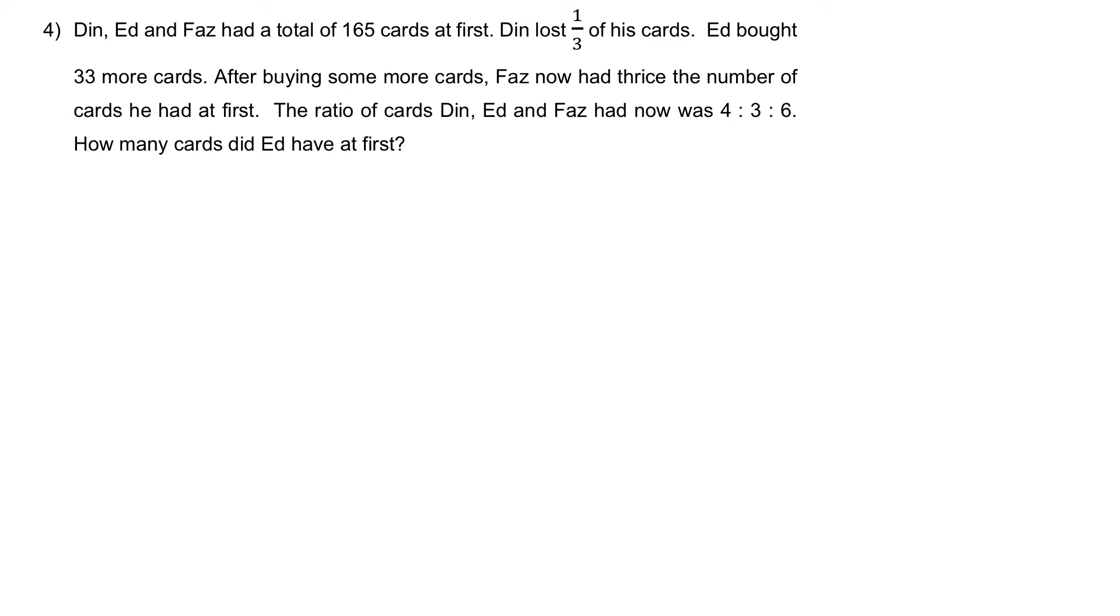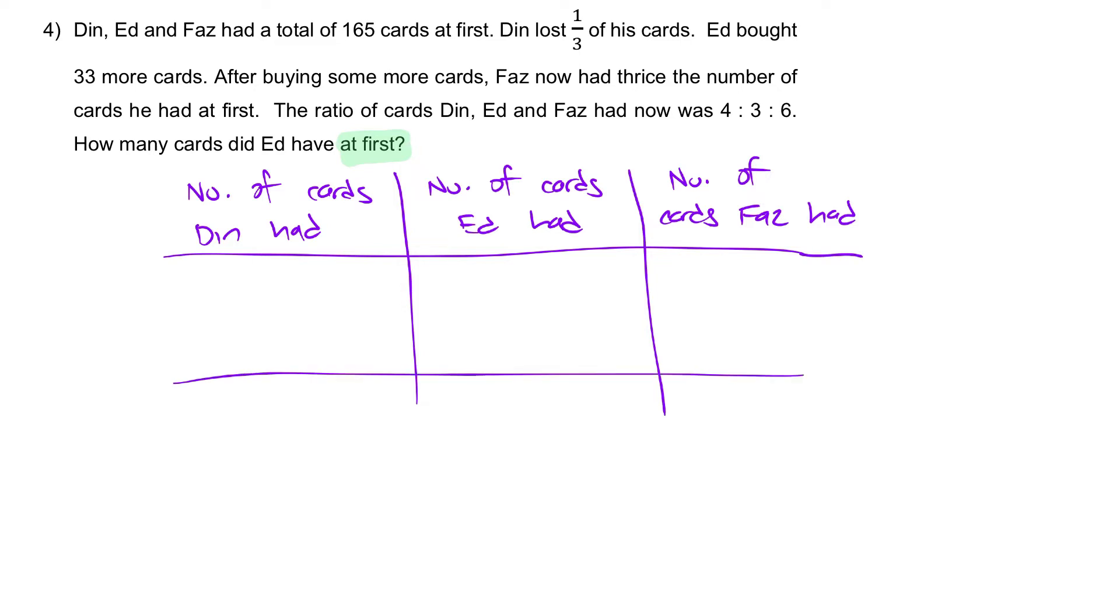For this question, we're going to work backwards. It will be much easier. So, we have number of cards Dean had, number of cards Ed had, number of cards Fuzz had. And we're going to have before and after.